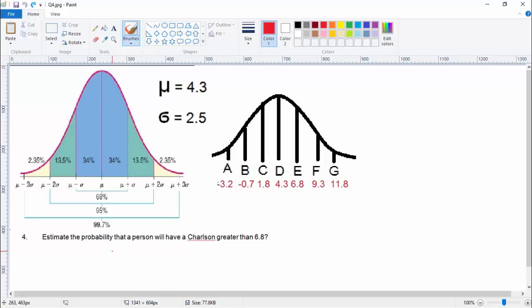Secondly, before we were doing things like from one value to another, like between 1.8 and 6.8. This time in question four, we're saying greater than 6.8. And where's 6.8? That's here. So that is technically at mu plus one standard deviation. So that's here.